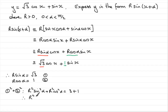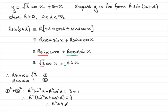Factorising, we pull out r squared as a common factor and get r squared times (sine squared alpha plus cos squared alpha) equals 4. Now sine squared alpha plus cos squared alpha is always 1 — that's a well-known identity. So we get r squared times 1, which is just r squared equals 4. Square rooting gives r equals plus or minus 2, but since r must be greater than 0, r equals 2.